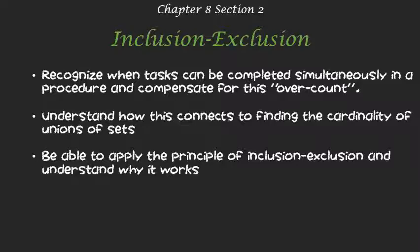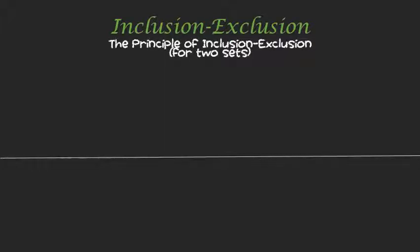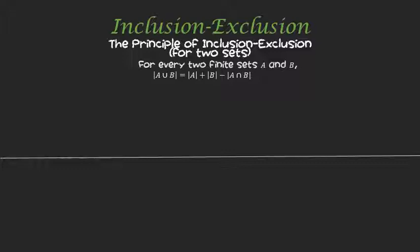So let's get started and talk about inclusion-exclusion. We've already talked about applying the idea of taking off common elements — removing one set of duplicates. We did that in the last video. So let's strengthen and generalize that idea. Here's the principle of inclusion-exclusion for two sets: if we're given two finite sets A and B, then the cardinality of their union is the cardinality of A plus cardinality of B minus the cardinality of their intersection.